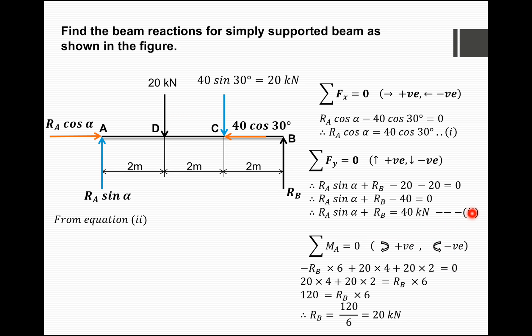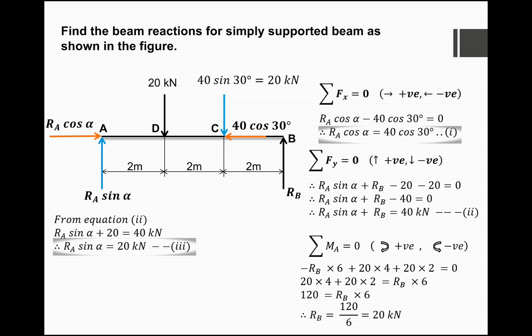From Equation 2, Ra·sin(α) + Rb = 40 kN, substituting Rb = 20 kN gives Ra·sin(α) = 40 − 20 = 20 kN. We call this Equation 3.